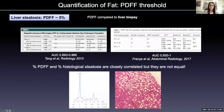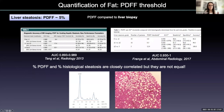With MR, we estimate the proportion of protons contained within fat molecules in a 3D liver voxel, while with histological analysis we evaluate the proportion of hepatocytes with macrovesicles of fat in a 2D image. These entities are extremely well correlated but are not exactly the same thing.